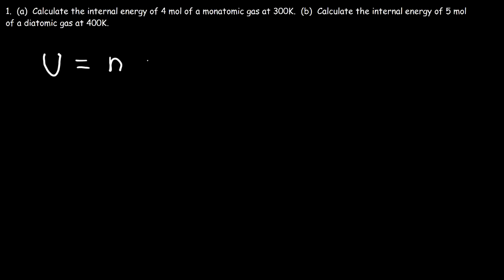In this video we're going to focus on calculating the internal energy of gases. In this first example we need to calculate the internal energy of a monoatomic gas. The formula we need is: internal energy equals the number of moles (n) times the molar heat capacity at constant volume (Cv) multiplied by the temperature.